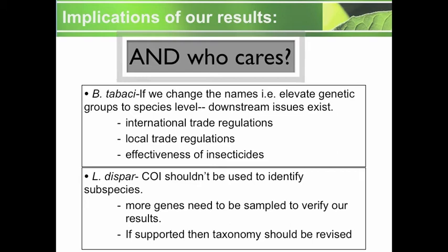For Lymantia dispar, CO1 shouldn't be used to identify subspecies as the resulting phylogeny was unresolved. More genes are needed to verify our results, and if that's the case the taxonomy should be revisited. Thank you for taking the time to watch our video abstract. Please feel free to download our paper and send any queries to the email below.